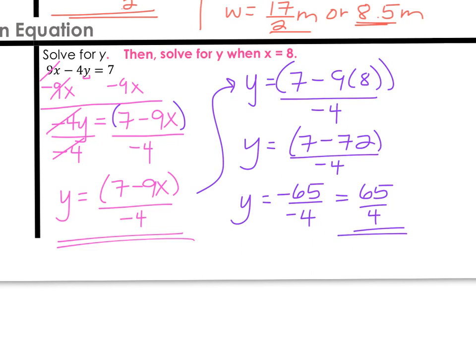If you multiply the 9 and the 8, you should get 72. 7 minus 72 is negative 65. And if you divide negative 65 by negative 4, really the only thing you can simplify is that the two negatives cancel. And your final answer is positive 65 fourths.